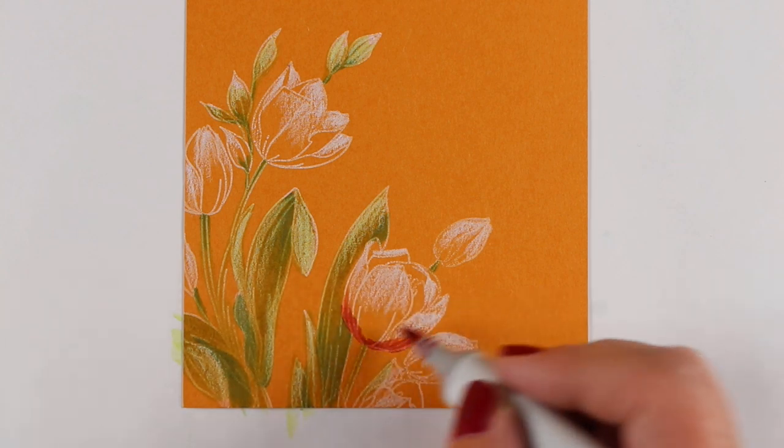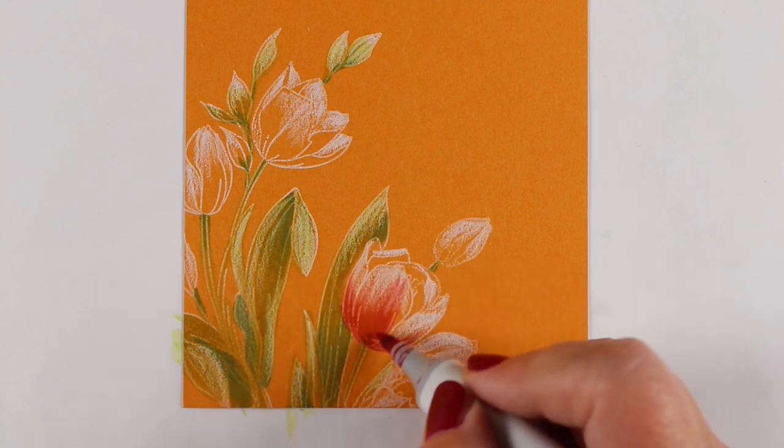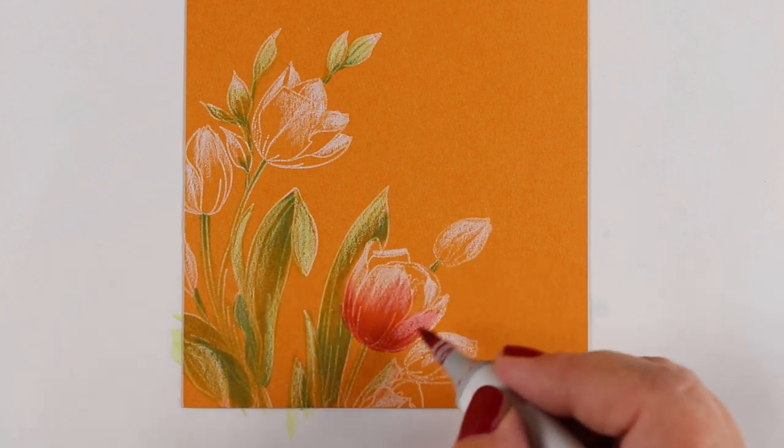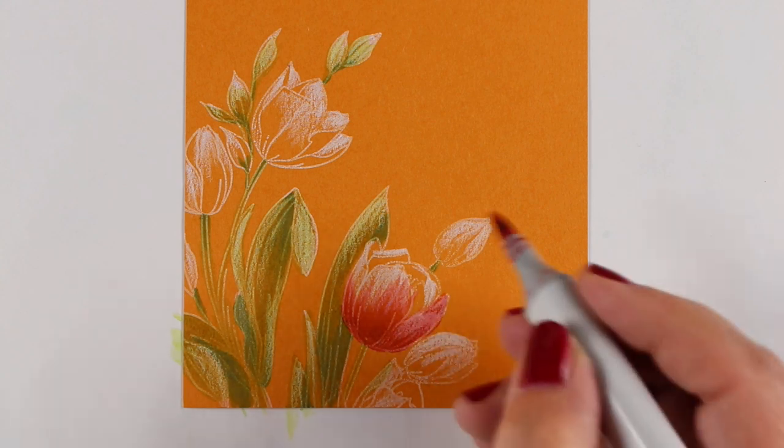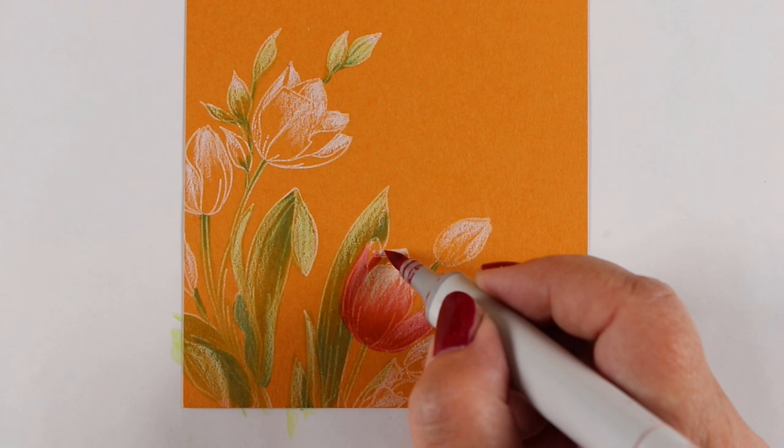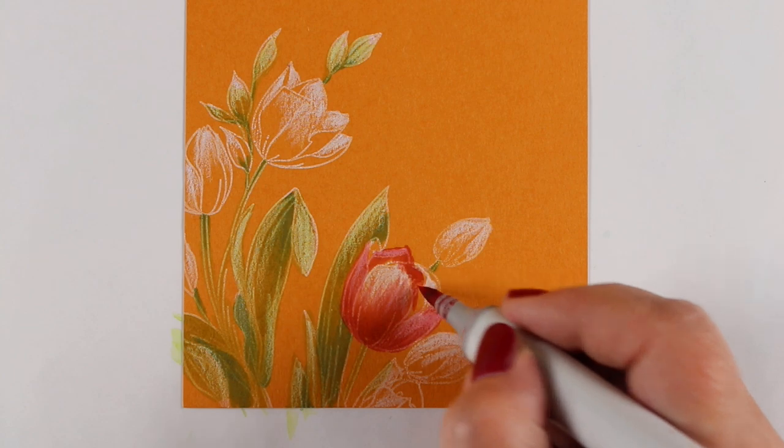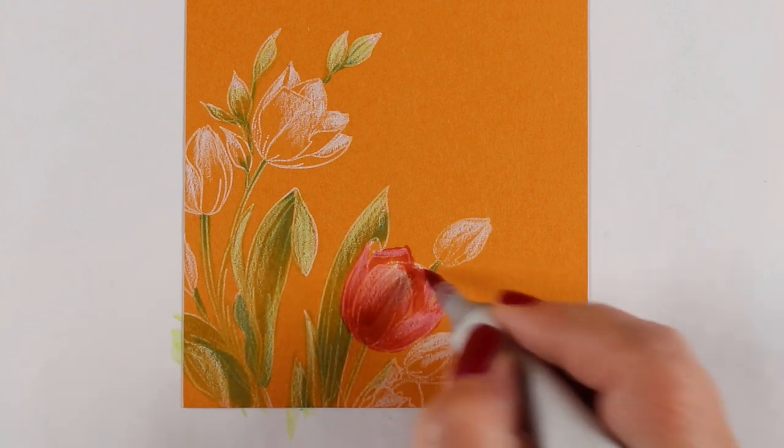I wanted red tulips. I thought red tulips on this really warm orangey yellow paper would be gorgeous. So I started doing flicks from the bottom up and then making sure that I covered the petals on the inside.